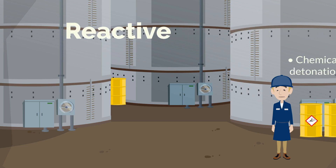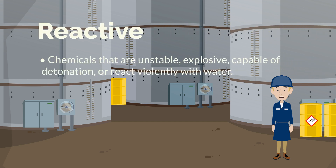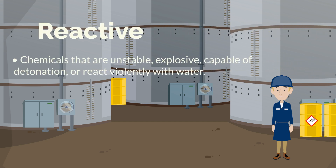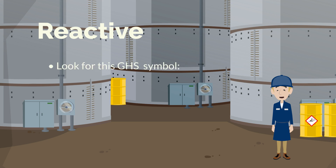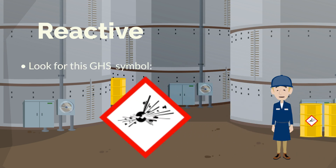Reactive. These chemicals are unstable, explosive, capable of detonation, or react violently with water. Some common examples of reactive chemicals include alkali metals such as sodium, lithium, potassium, and others. Look for this GHS symbol.